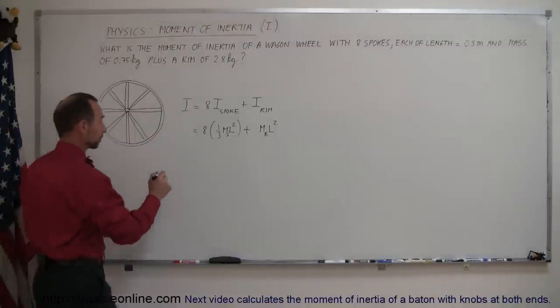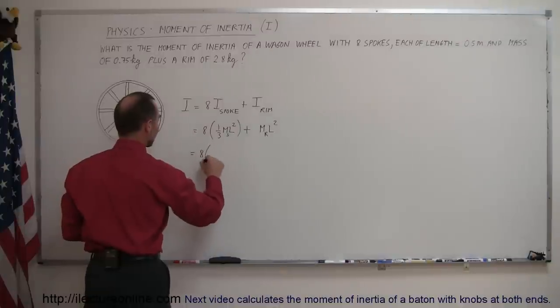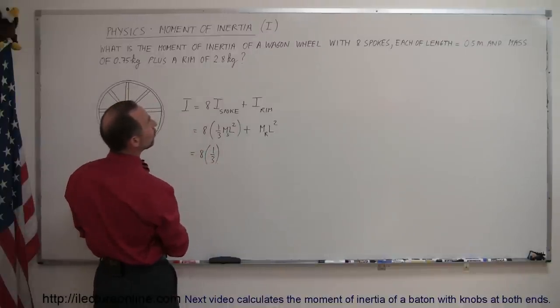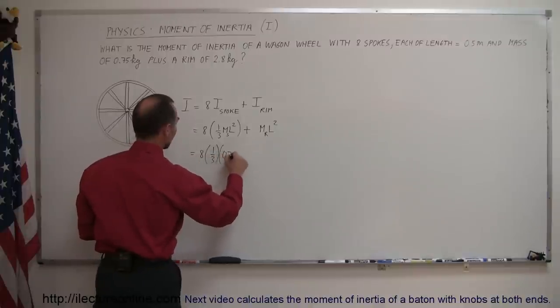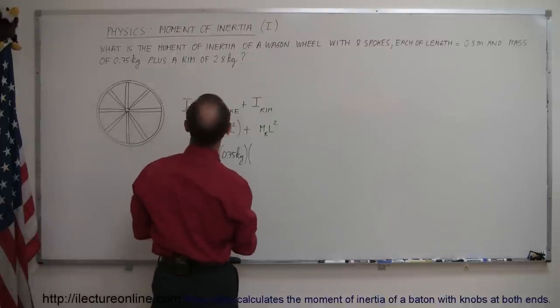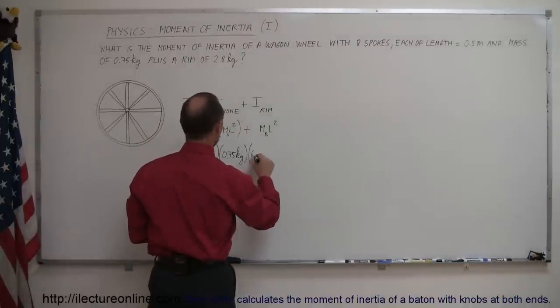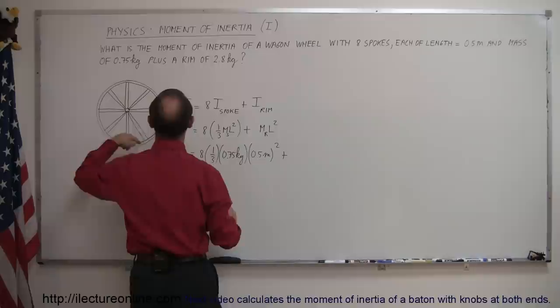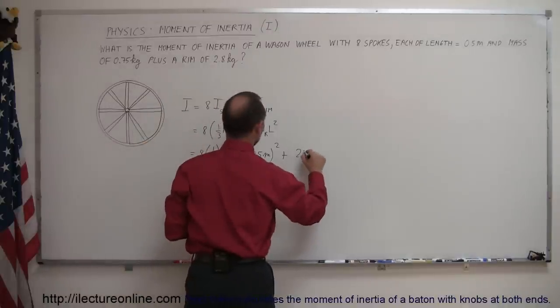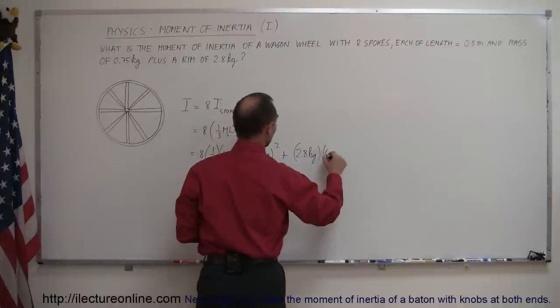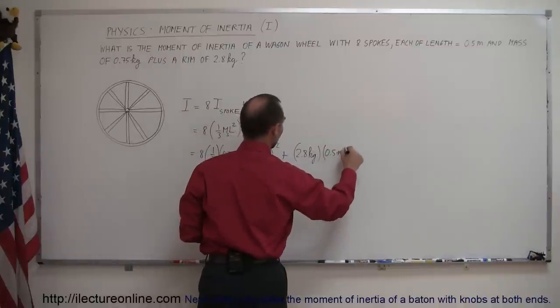And that's how we figure that out. Now what we have to do is plug in the numbers. So eight times one-third the mass of each spoke is 0.75 kilograms times the length of each one. And the length is 0.5 meters. So 0.5 meters and that's squared plus the mass of the rim which is 2.8 kilograms times the length, or in this case the radius that would be 0.5 meters and that's also squared.